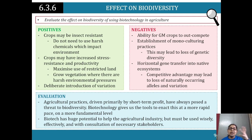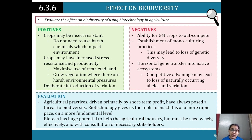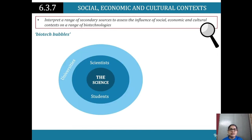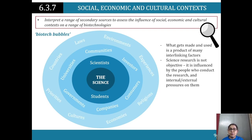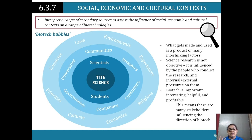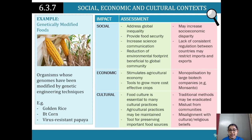Effects on biodiversity: positives include insect-resistant crops that reduce harsh chemical use. Negatives include the ability for GM crops to out-compete natural crops. Evaluating this: agricultural practices driven by short-term benefit have always threatened biodiversity, and biotechnology accelerates this at a more fundamental level. However, biotech has huge potential to help agriculture if used wisely. Research is influenced by many interlinking factors and is not purely objective - biotech is interesting, helpful, and profitable. Examples include golden rice, BT corn, and virus-resistant papaya, each with social, economic, and cultural implications.